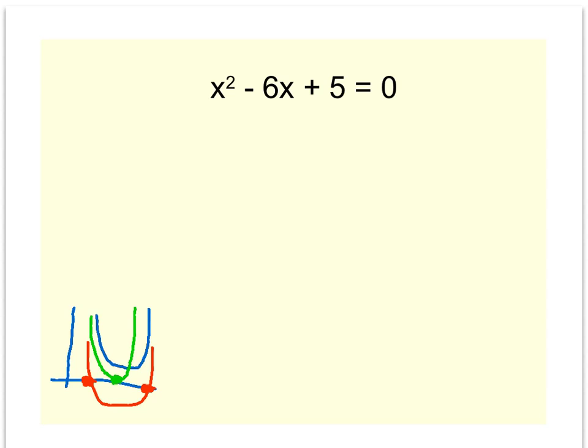We're going to go about this factoring how we're used to. Multiplying to give me five, and adding to give me negative six. Well, when I make my list of factors, five times one is the only way to multiply to give me five, and a negative five plus a negative one gives me a negative six, and a negative five times a negative one gives me a positive five. So I split up my x's and have a negative five and a negative one.